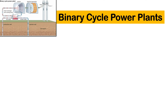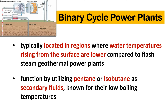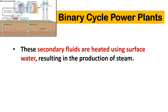Binary cycle power plants are typically located in regions where water temperatures rising from the surface are lower compared to flash-steam geothermal power plants. They function by utilizing pentane or isobutane as secondary fluids, known for their low boiling temperatures. These secondary fluids are heated using surface water, resulting in the production of steam.